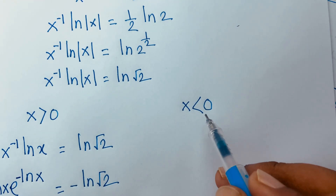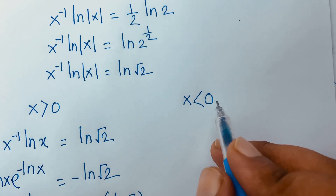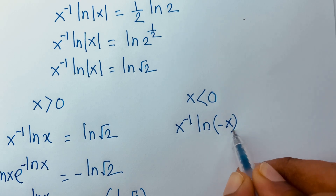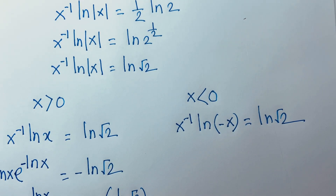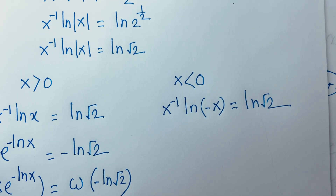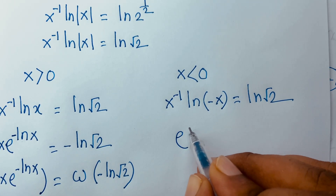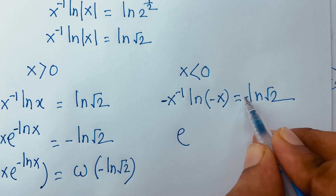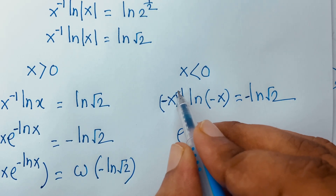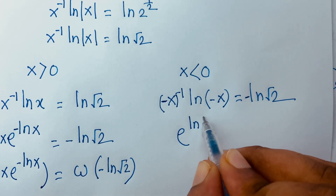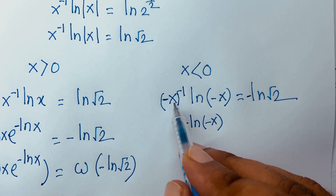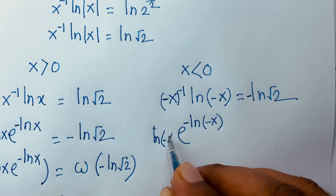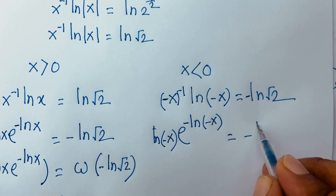For the other case, x less than 0, meaning x is negative. I rewrite x inverse times ln(x), and since x is negative I substitute minus x, so it becomes minus x to the power minus 1 times e to the power minus ln(minus x), and ln(minus x) is equal to minus ln(√2).